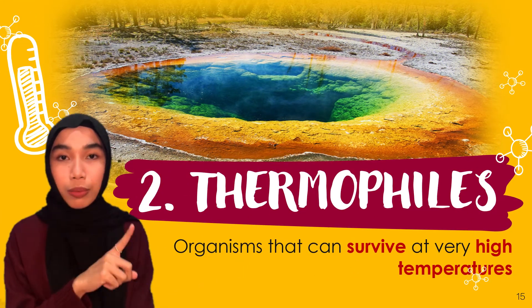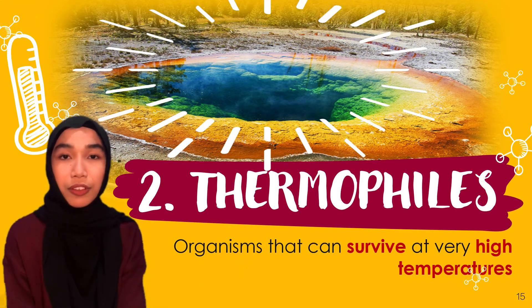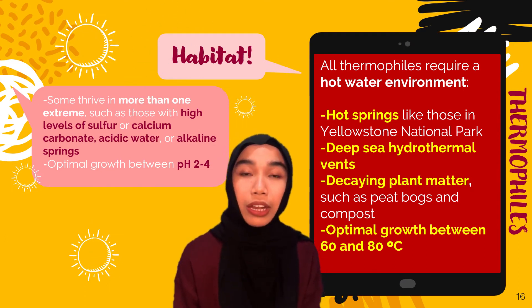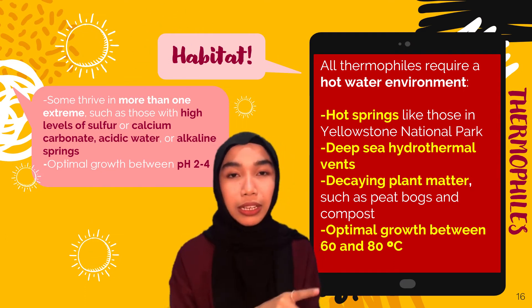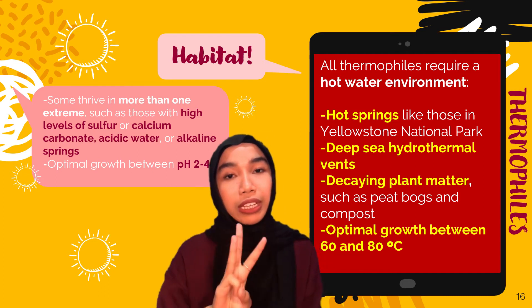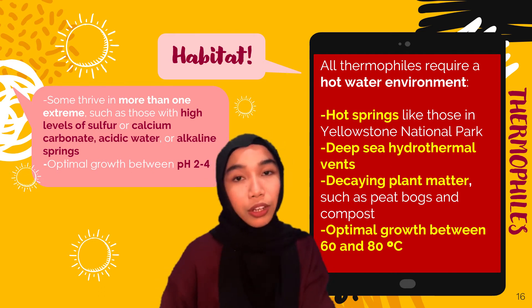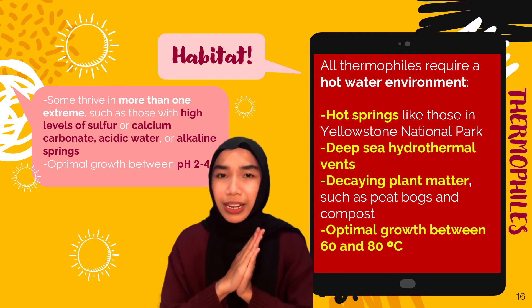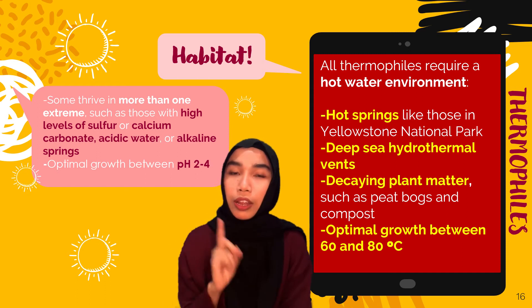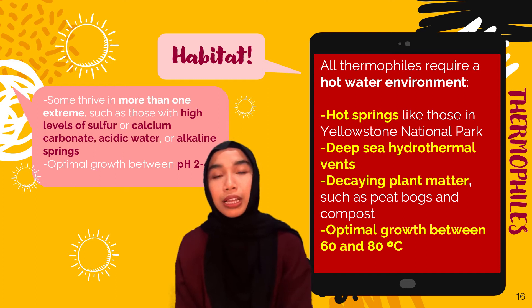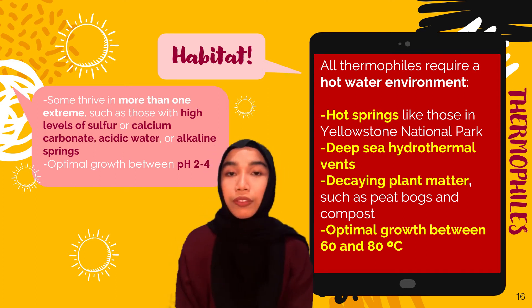The second extremophile is the thermophile — an organism that can survive at very high temperatures. All thermophiles require a hot water environment, making them common in hot springs like the one in Yellowstone National Park, in hydrothermal vents, deep-sea hydrothermal vents, or even in decaying matter like peat bogs and compost. They usually need around 60 to 80 degrees Celsius for optimal growth.